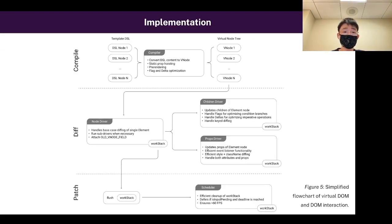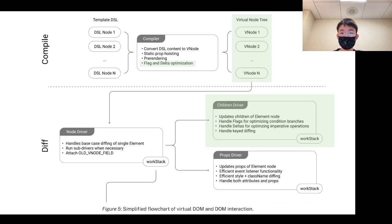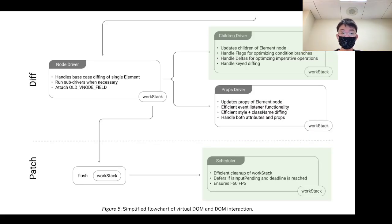My implementation consists of three phases: compile, diff, and patch. My major optimizations within the diff and compile phases are how I generate the virtual nodes and the children driver, where I leverage the compiler heavily. Additionally, I have a decoupled scheduler inside Million.js to ensure over 60 frames per second performance when the user is on the web page.